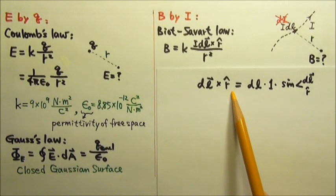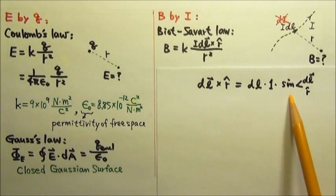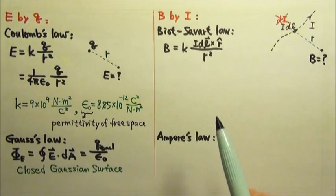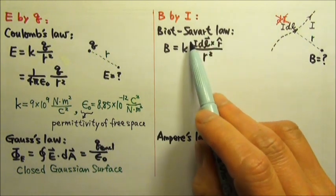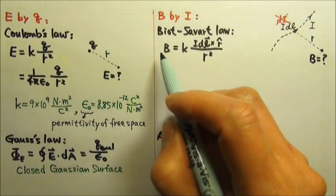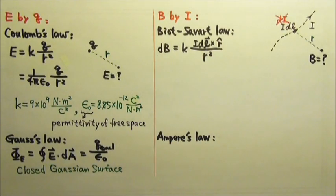This cross product does not involve the distance r, it only tells us that the angle matters. Because the source is an extremely small segment of current, its magnetic field is actually dB instead of B.